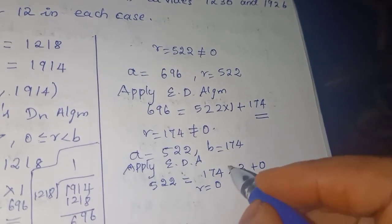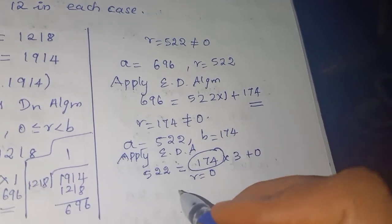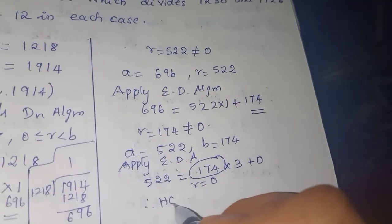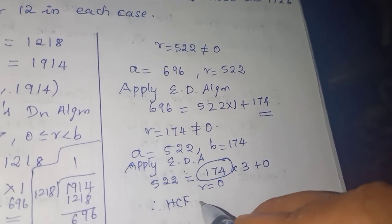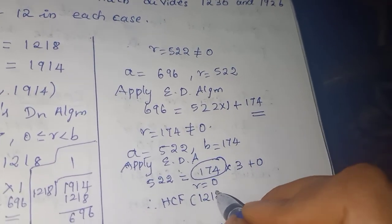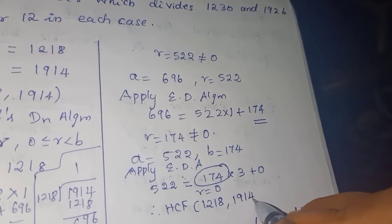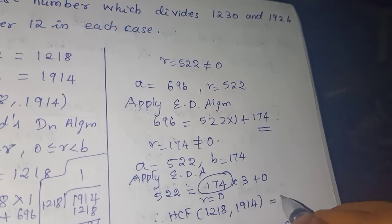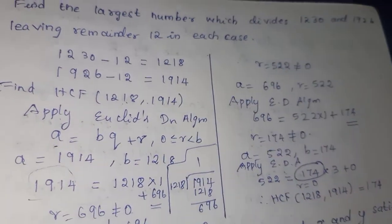When the remainder is 0, the last divisor is the HCF. Therefore, HCF of 1218 and 1914 is 174. So 174 is the answer — the largest number that divides both 1230 and 1926 leaving remainder 12.